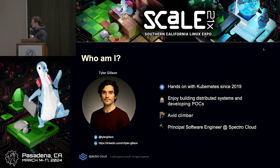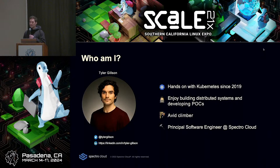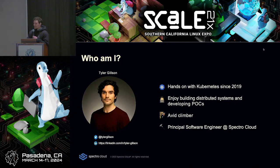A little bit about me: I've been working hands-on with Kubernetes and Go since 2019. I'm in charge of Spectro Cloud's advanced projects team, so I like getting hands-on with all the latest Kubernetes tech, building POCs, and also working on our back-end. And when I'm not doing that, I try to get outside and play with rocks.